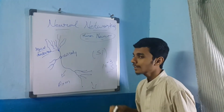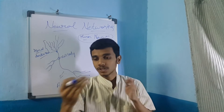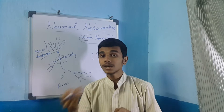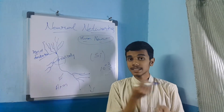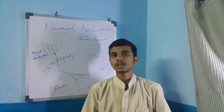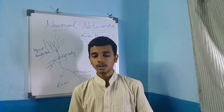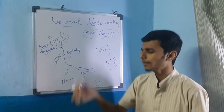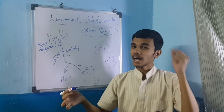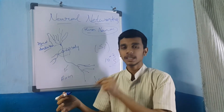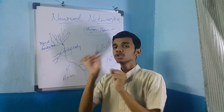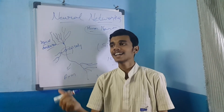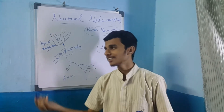The cell body converts those signals into an electrical impulse and sends it to our body. For example, if I am lifting a pen, the brain gives an electrical impulse or signal to the particular hand, and we are going to write it on the board.